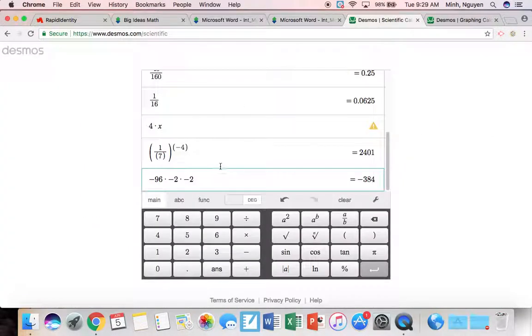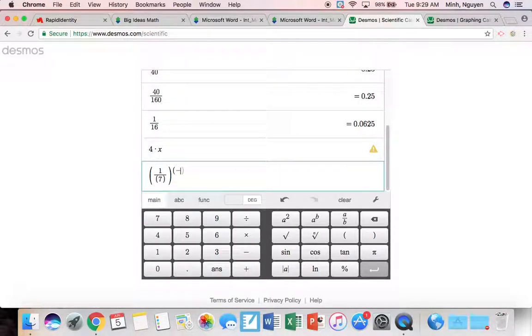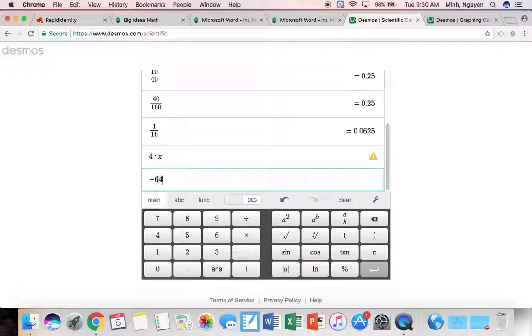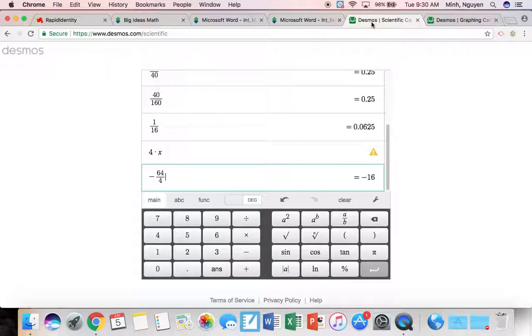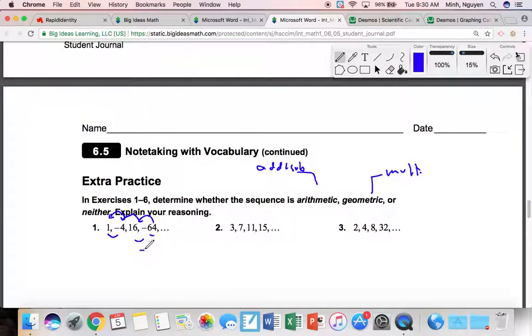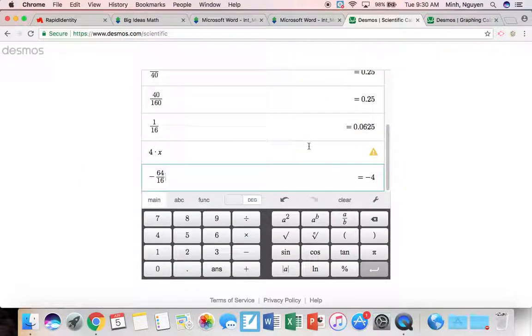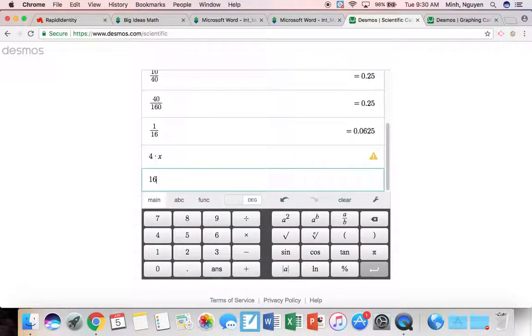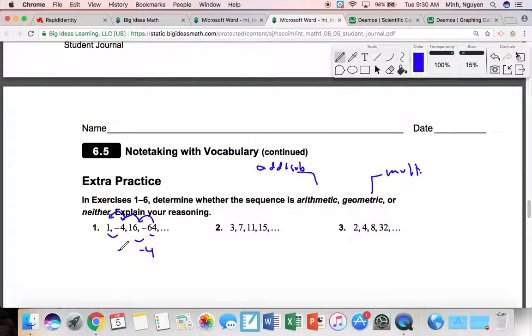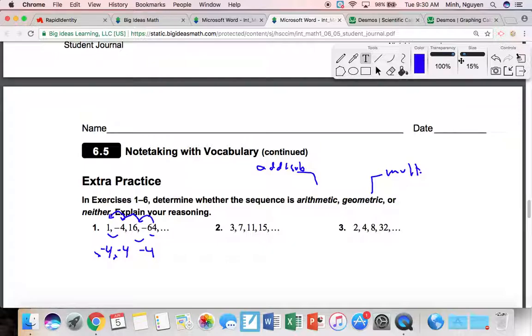So negative 64 divided by 16 equals negative 4. 16 divided by negative 4, I get negative 4 again. And negative 4 divided by 1 is negative 4. So I'm multiplying by negative 4. This is geometric, multiplying by constant ratio of negative 4.